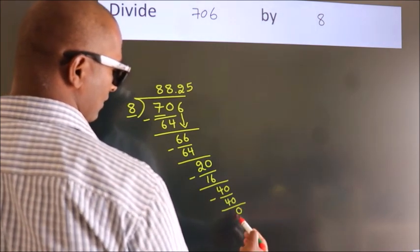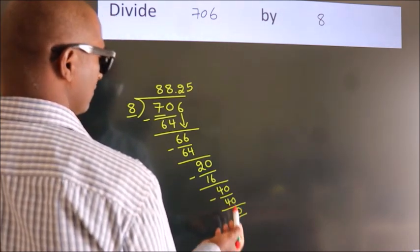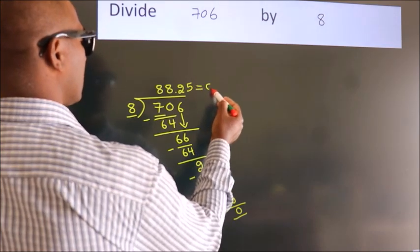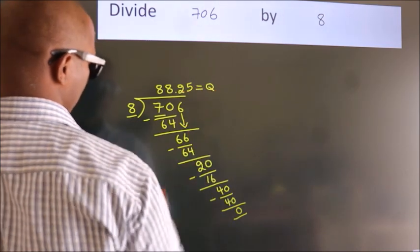Here, we got remainder 0. So, this is our quotient. 88.25.